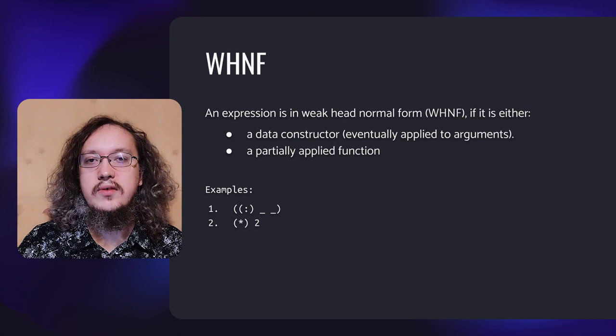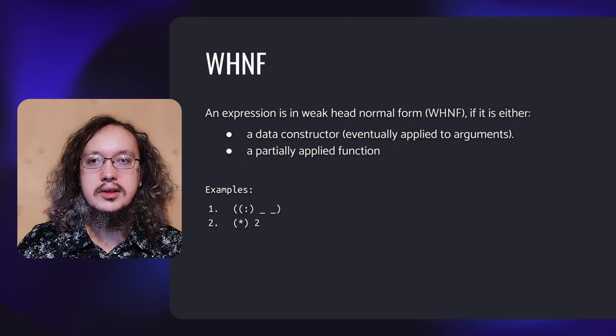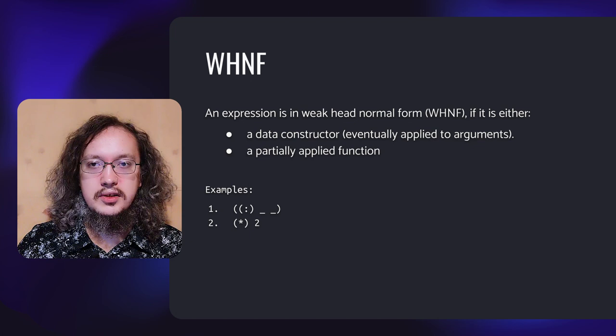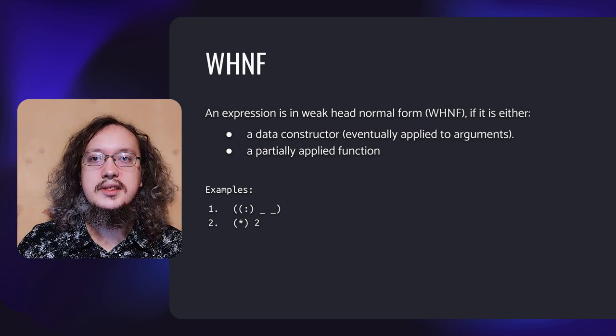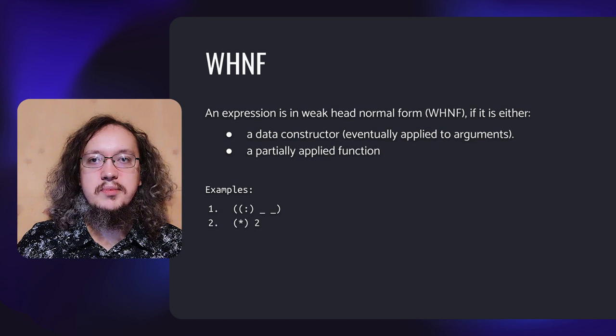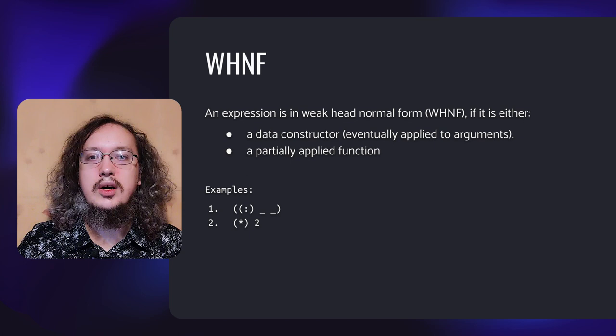An expression in weak head normal form has been evaluated up to the outermost data constructor or lambda abstraction — the head. Sub-expressions may or may not have been evaluated. Therefore, every fully evaluated expression is also in weak head normal form. Unlike the normal form, which cannot be reduced further, the weak head normal form is usually a partially reduced expression. In the first example, underscores denote thunks, and we know that it's a non-empty list. I should also mention that polymorphic functions are not in weak head normal form until they are fed specific types.